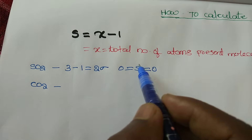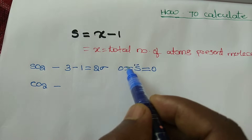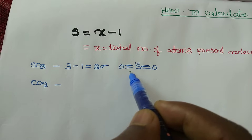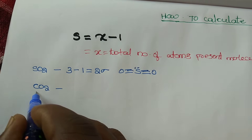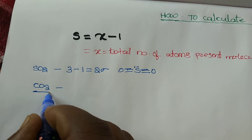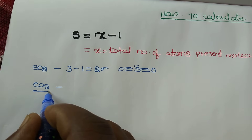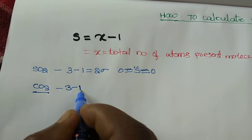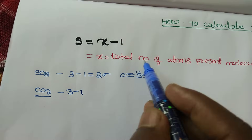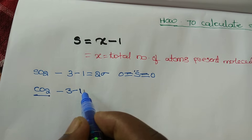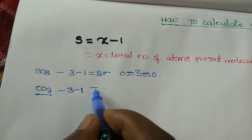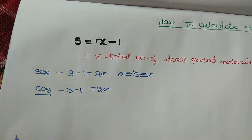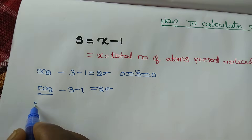By drawing the structure of SO₂ you can confirm: there are two sigma bonds — one sigma bond and one pi bond per S=O bond. Applying the formula: three atoms, three minus one equals two sigma bonds.